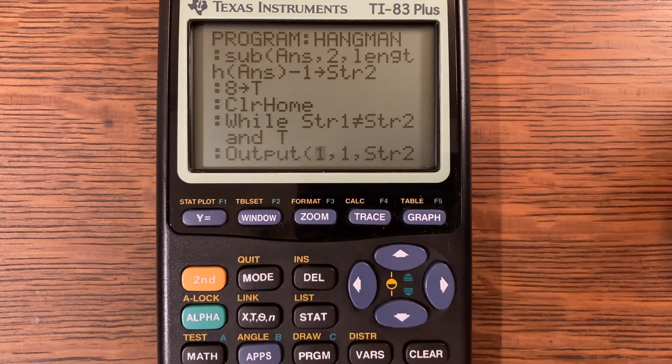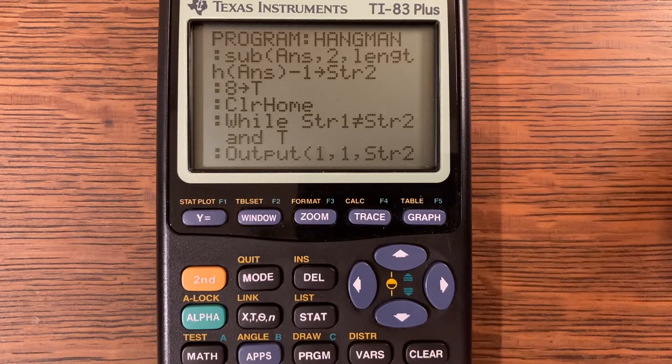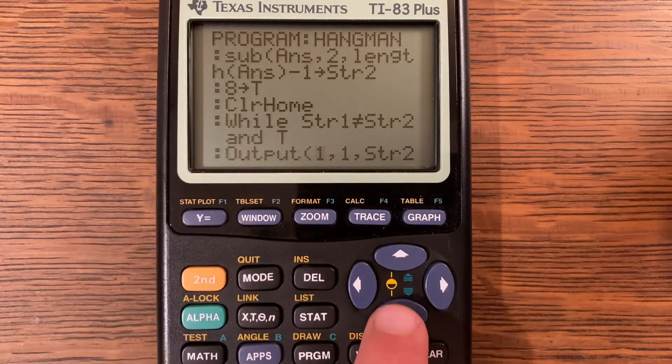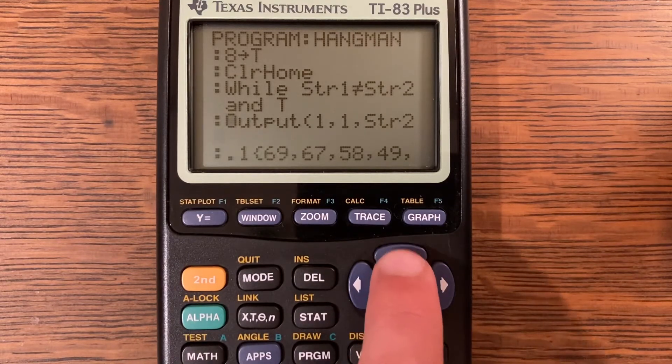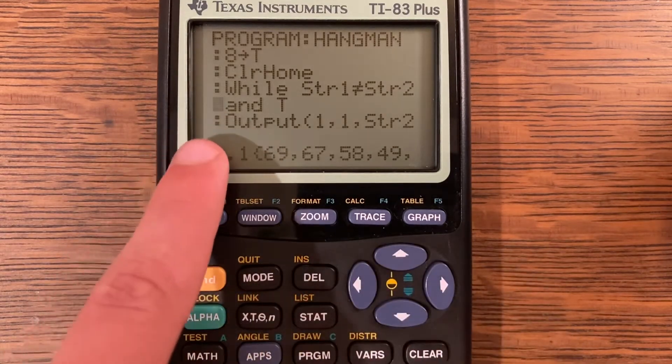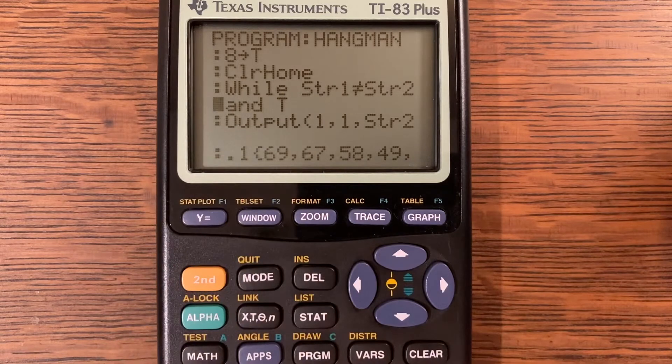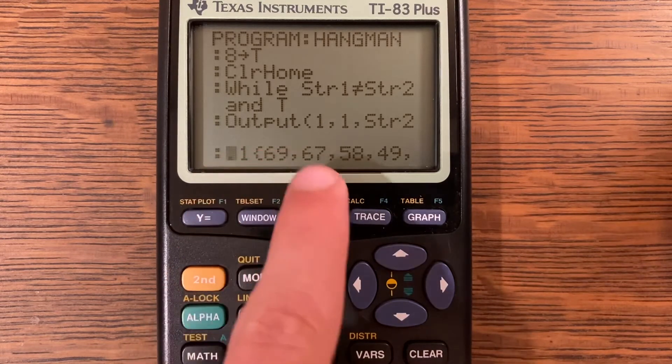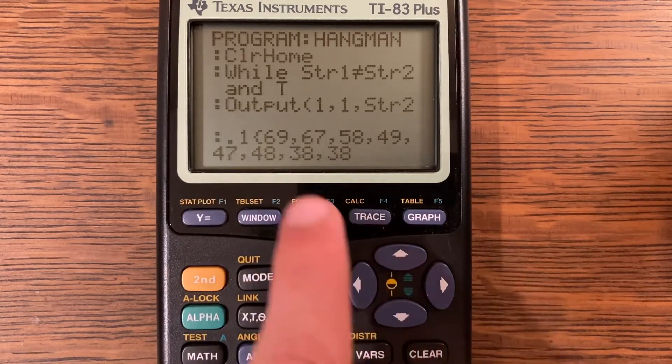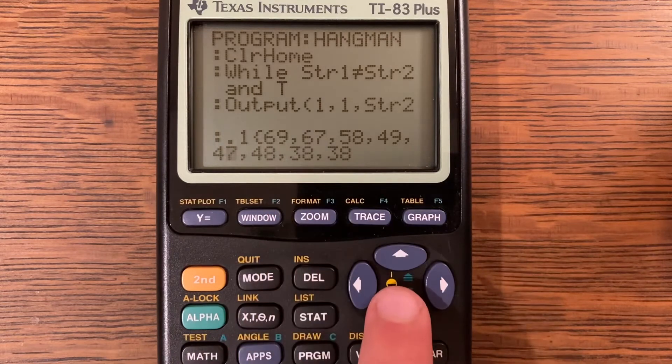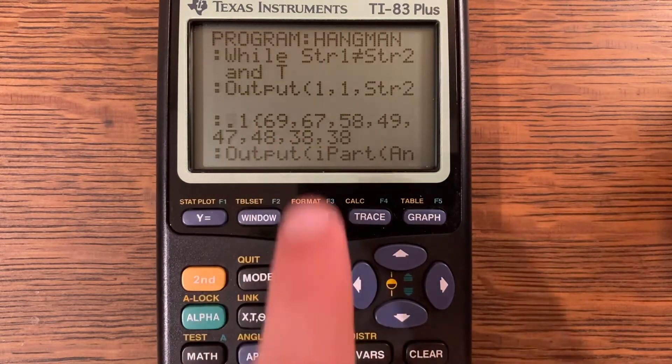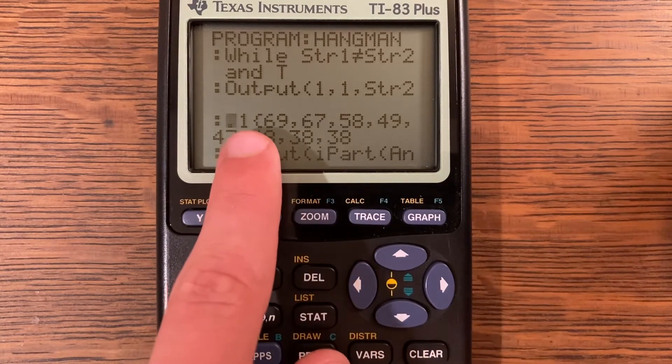Clear home. While string one is not equal to string two and t, so t is basically your lives in this. If you miss eight times you lose. Output at one comma one comma string two. Point one of the list here, this is a fancy bracket, it's actually being multiplied. This is a very advanced thing that I may use in a future program. It actually gave me a good idea and I'll explain it in just a second here.